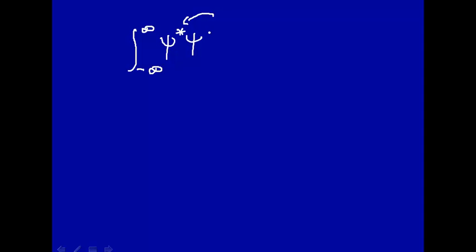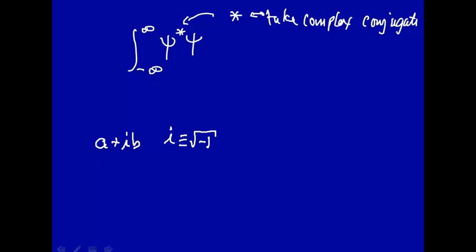And we'll introduce here this symbol, complex conjugate. Because we said that, in general, a wave function can be a complex number. And the way you square the complex number in order to get a real number, because this is going to be probability, is to take the complex conjugate. So star means take complex conjugate. Suppose you have a complex number, which can be written as a plus ib, where i is defined as the square root of minus 1. The complex conjugate of this number would be a minus ib. So the complex conjugate says take i and change it to minus i.